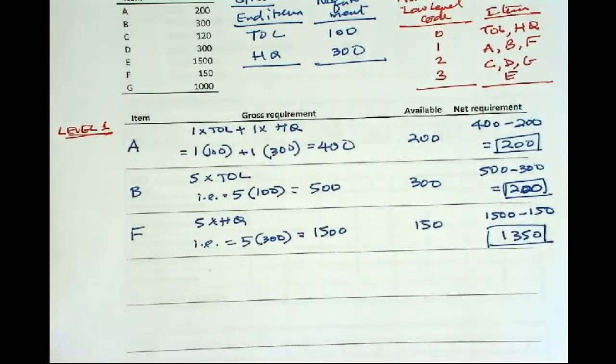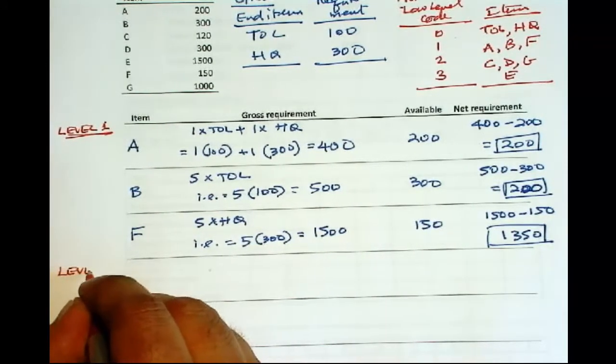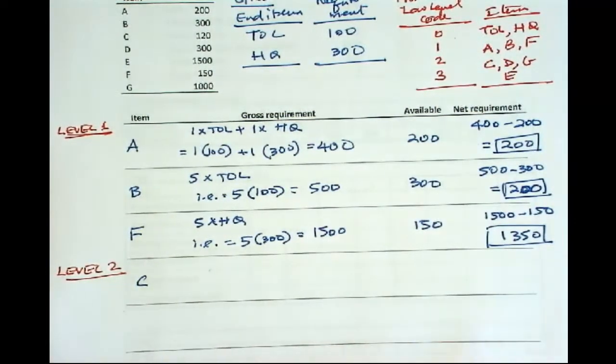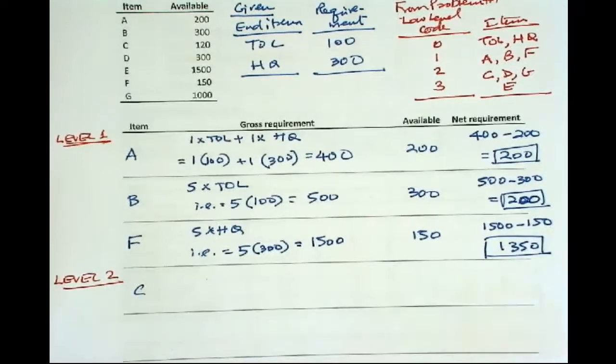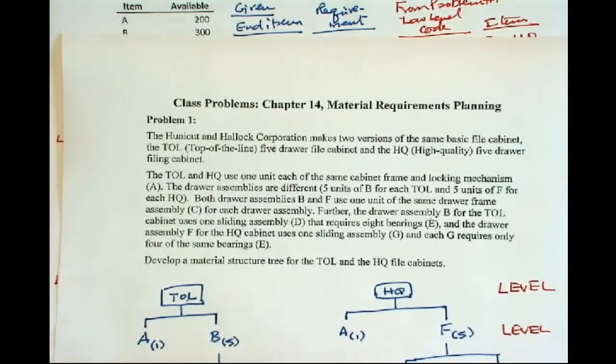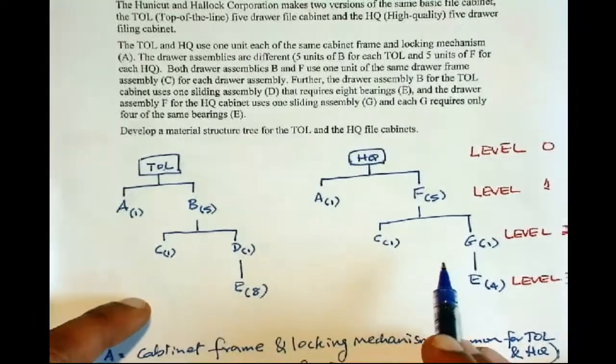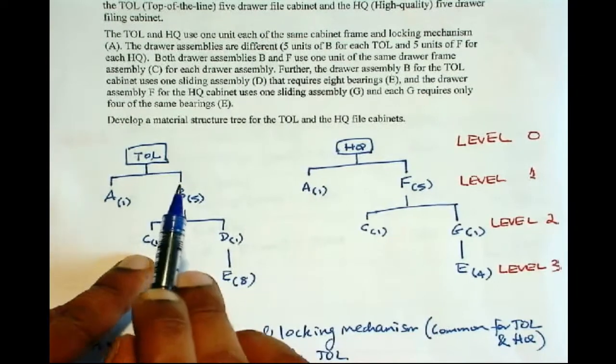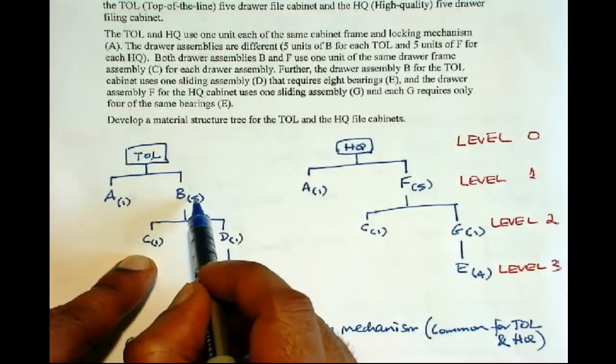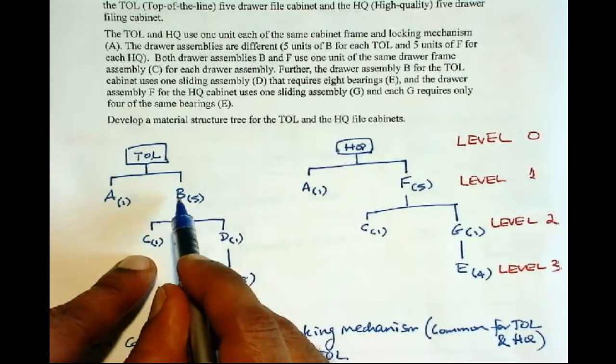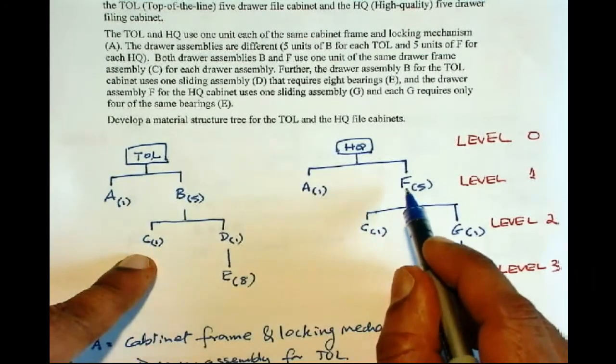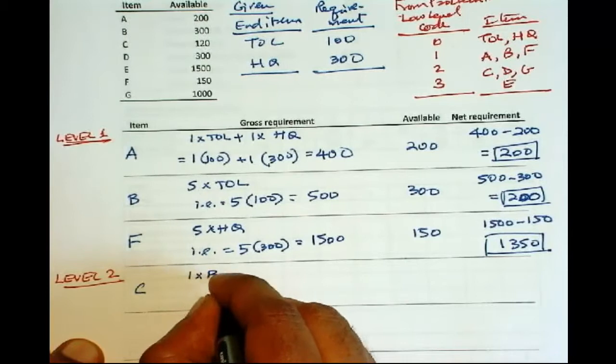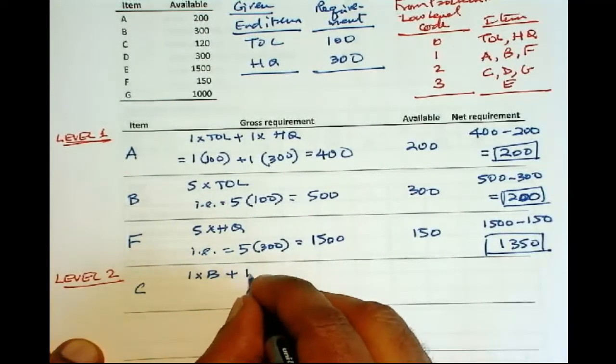Now we are done with level 1. Let us do level 2 now. Now C, there are two different instances of the same C. One is for B. So one unit of C for each B. Don't get confused with that 5. This 5 is related to TOL, not down here. One unit of C for each B and one unit of C for each F. So the gross requirement is 1 times B plus 1 times F.